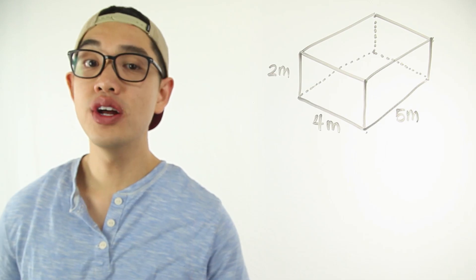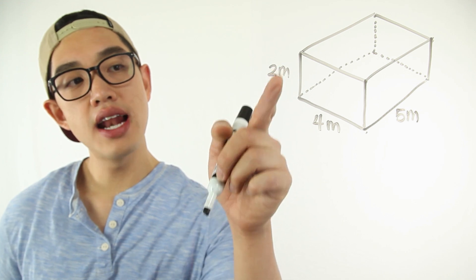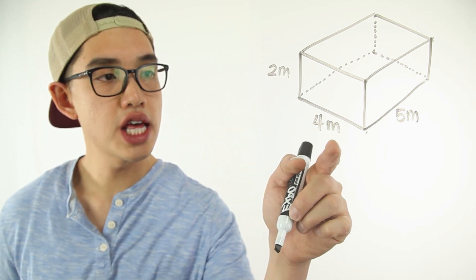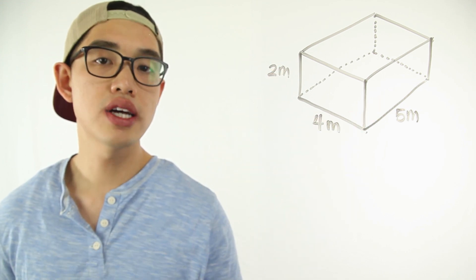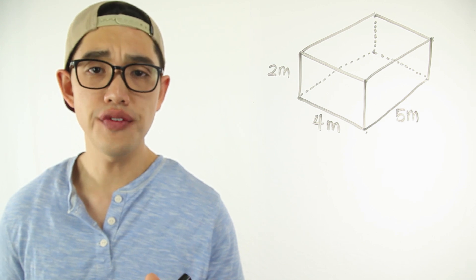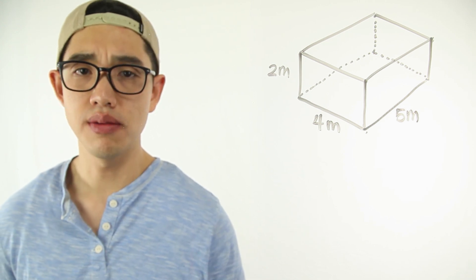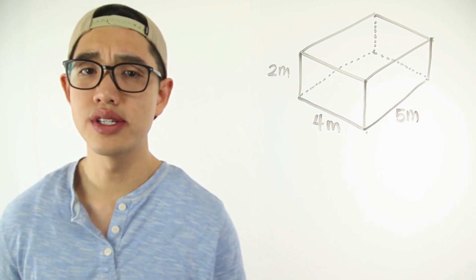Let's do another problem. I have another rectangular prism right here. This side is two meters, this side is four meters, this side is five meters. I want you guys to figure out what is the surface area of this rectangular prism. Go ahead, pause the video, try it yourself.